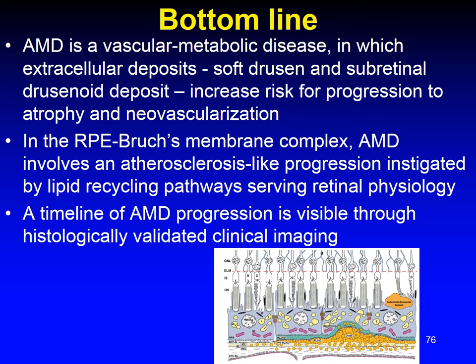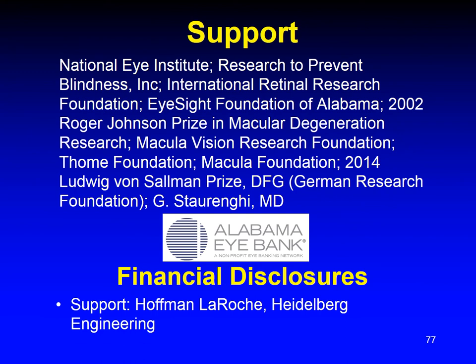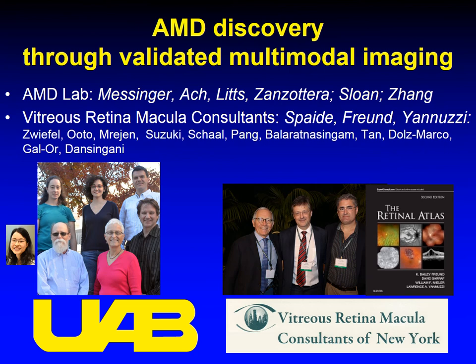In conclusion, AMD is a vascular metabolic disease in which extracellular deposits — soft drusen and subretinal drusenoid deposits — increase risk for progression to atrophy and neovascularization. In the RPE-Bruch's membrane complex, AMD involves an atherosclerosis-like progression instigated by lipid recycling pathways serving retinal physiology. A timeline of AMD progression is visible through histologically validated clinical imaging. I would like to acknowledge my grant support, financial disclosures, and the many contributions of my laboratory and colleagues, particularly my clinical co-operators at Vitreous Retina Macula of New York — Rick Spaide, Bailey Freund, Larry Yannuzzi — and thank you for your attention.